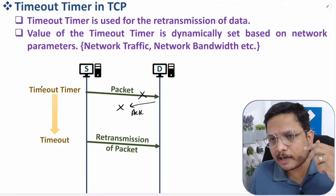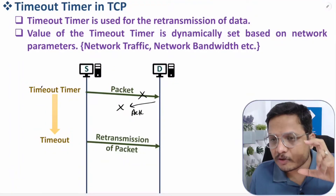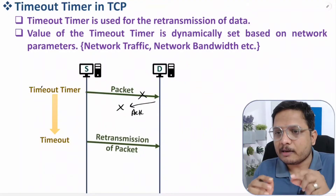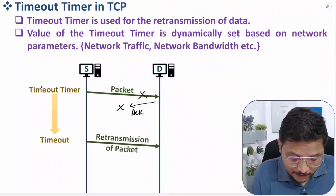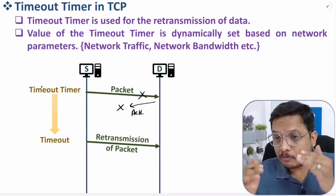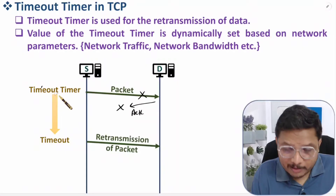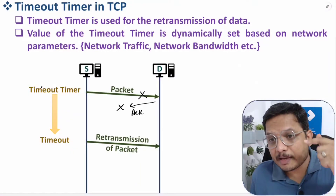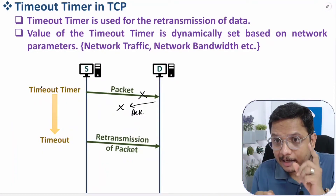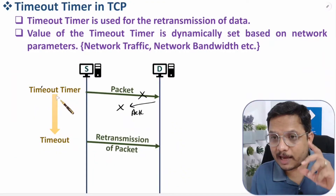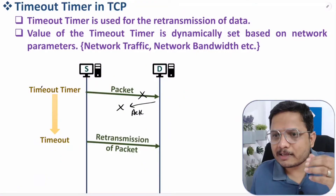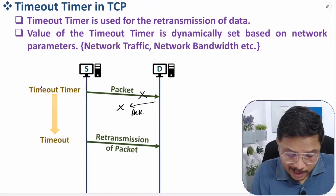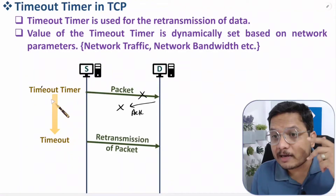There might be a question: why should we keep the timeout timer value dynamic? It should be dynamic because in a computer network, traffic changes with respect to time. At night, traffic will be less so the timeout timer value should be low, and during daytime traffic will be high so the timeout timer value should be higher. For example, at your college, during college time network traffic is high so the timeout period will be high, but on weekends traffic is very low so the timeout timer value will be low.